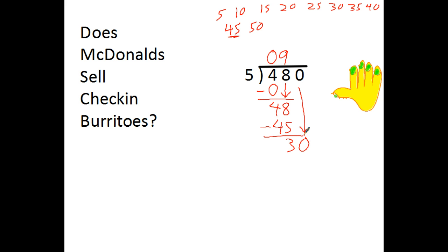3 is less than 5. Bring down my other number. I can use the same chart where I just made the multiples of 5. How many 5's in 30? 1, 2, 3, 4, 5, 6. 6 times 5 equals 30. When I subtract, nothing left.